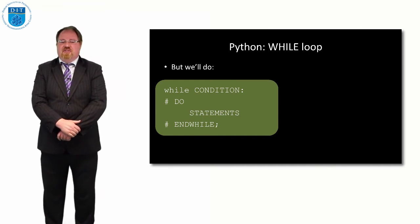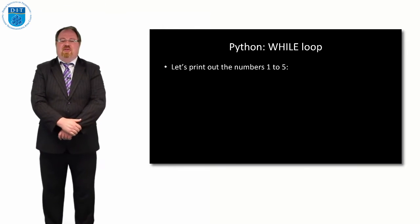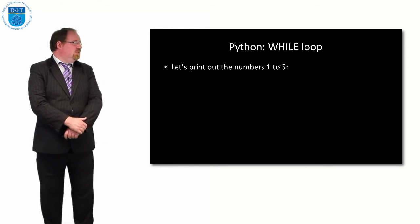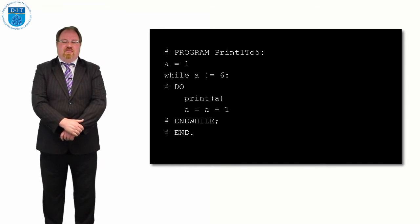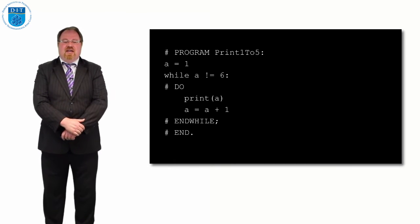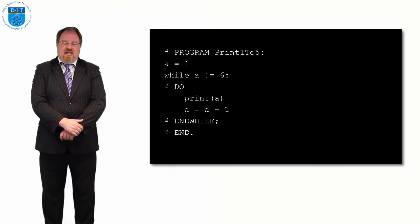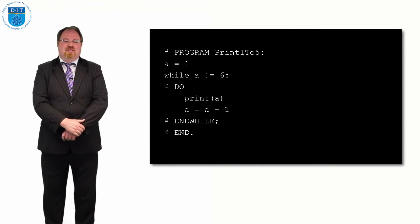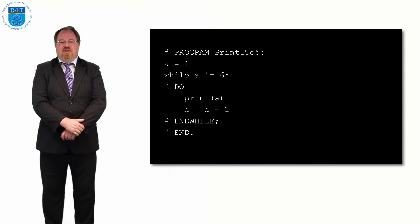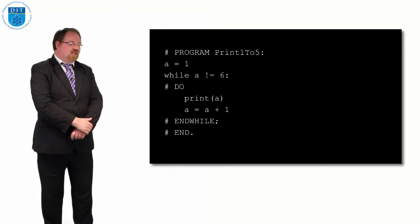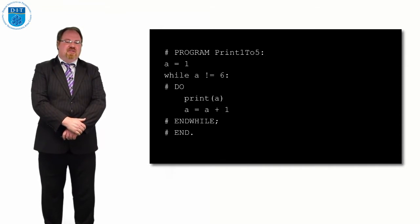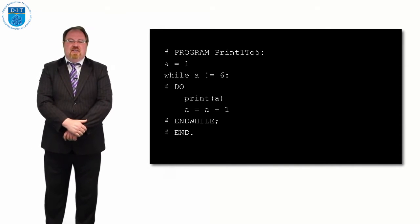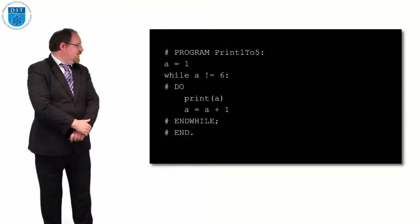So if we want to print out the numbers 1 to 5, the program is called 'print 1 to 5.' We say 'a gets the value 1, while a is not equal to 6, do print a, a gets a plus 1.' Assignment now uses the equal sign instead of the arrow sign, and not equal to is exclamation mark equals. The code says a is 1, while a is not 6, do print out a and add 1 onto a. The two statements after 'do' are indented, meaning they're included in the while loop. Then 'end while' is unindented.